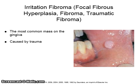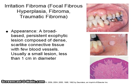An irritation fibroma, also known as focal fibrous hyperplasia, fibroma, or traumatic fibroma, is the most common mass on the gingiva and is caused by trauma. The appearance is a broad-based, persistent, exophytic lesion composed of dense, scar-like connective tissue with few blood vessels. It is usually a small lesion, less than one centimeter in diameter.